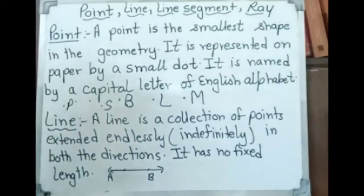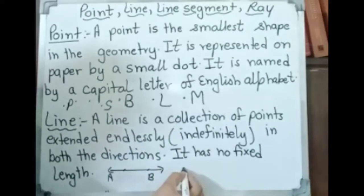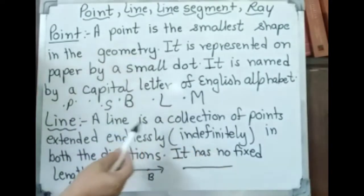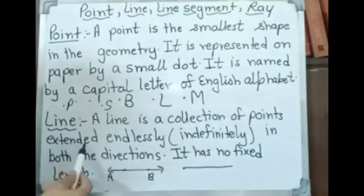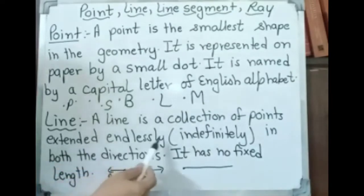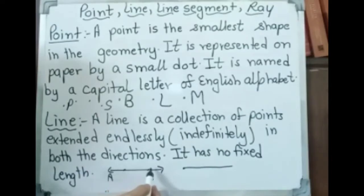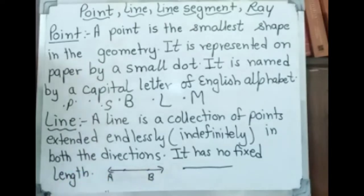Now, line. A line is a collection of points. Look at here — this is a point and this is a line. A line is a collection of points that extends endlessly. As you have done in class 3, both-side arrowheads show that in both directions it has no fixed length. This is a line.